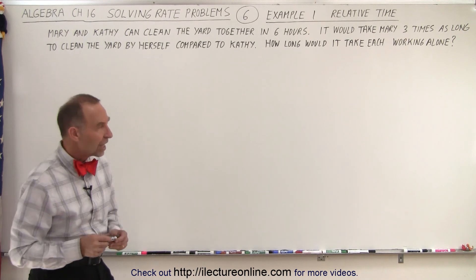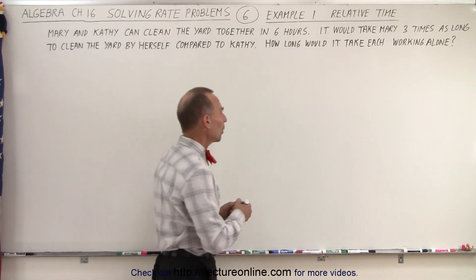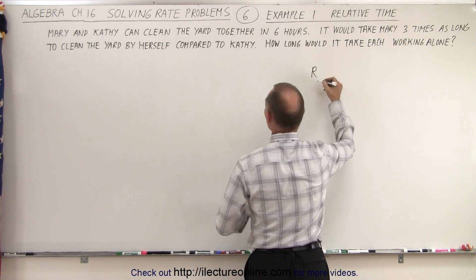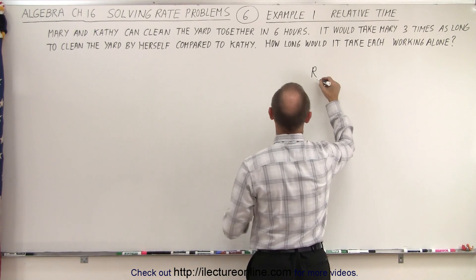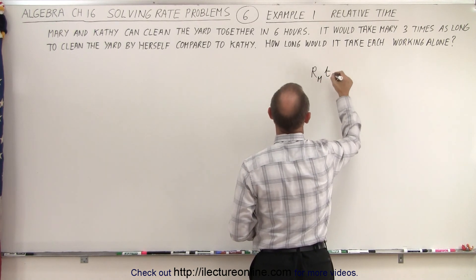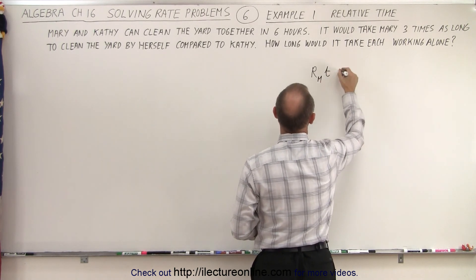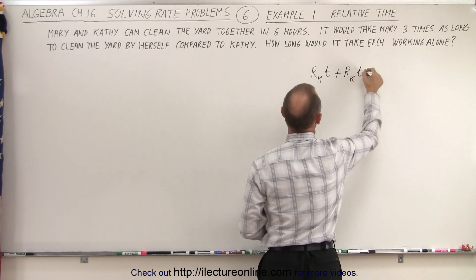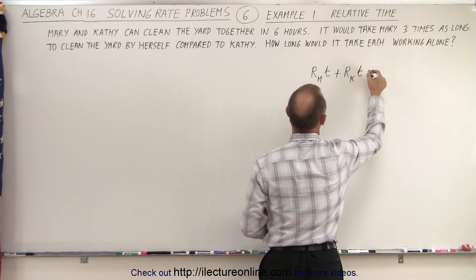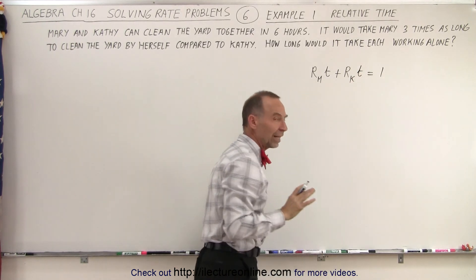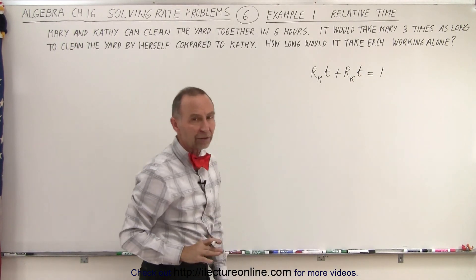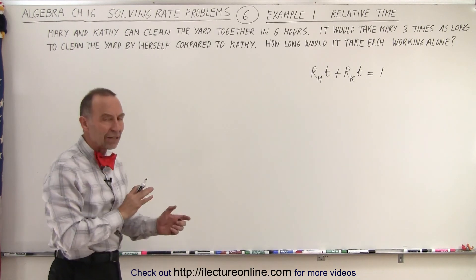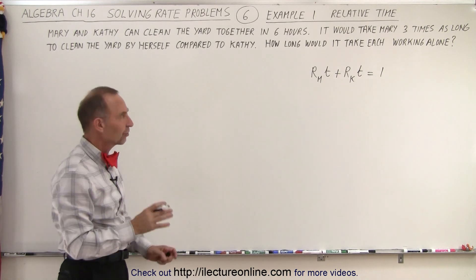We can still use the same original equation. We can still say that the rate of the first person — in this case let's call it Mary — times the total time spent, plus the rate of Kathy times the total amount of time spent, equals the whole job done. So that's still correct, but now we need to find a relative rate for Mary versus Kathy.